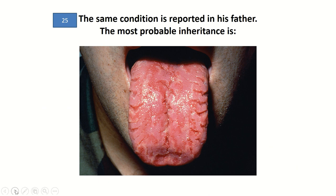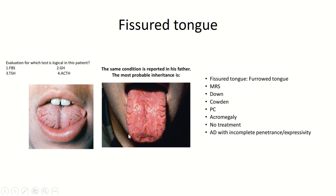The same condition is reported in the patient's father — the most probable inheritance is: fissured tongue is found in normal individuals, in association with geographic tongue, and in Melkersson-Rosenthal syndrome, Down, Cowden, pachyonychia congenita, and acromegaly. This condition needs no treatment, and in normal individuals it can be inherited as autosomal dominant.